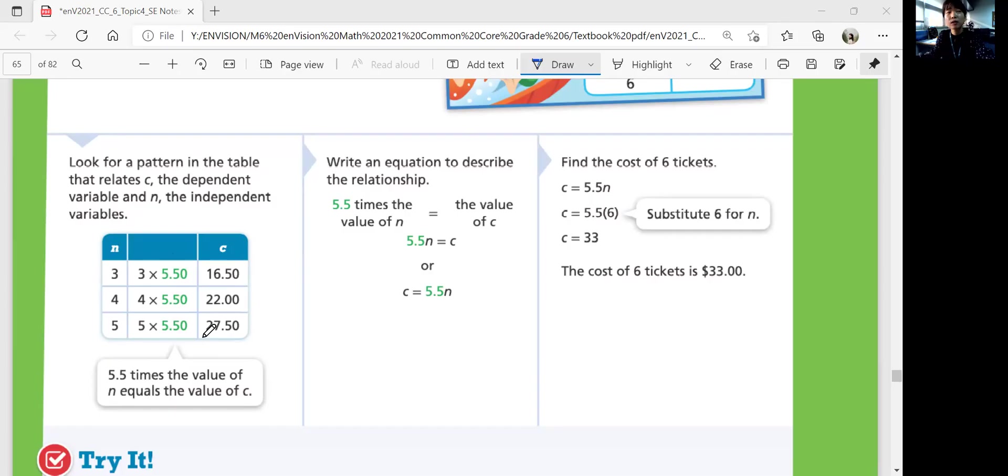So you're going to write an equation to describe the relationships. 5.5 times N is equal to C, the value of C. So C equals 5.5N. So find the cost for 6 tickets. 6 tickets is when N is 6. So 5.5 times 6 would be 33. The cost of 6 tickets is $33.